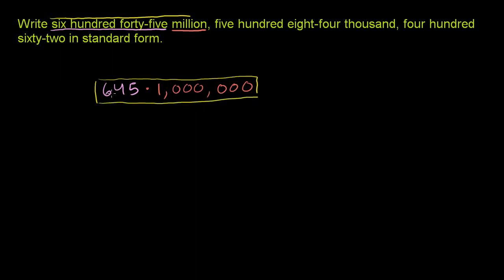What is that when we write it out? If we multiply this out, this equals 645 times the 1 with 6 zeros behind it. I'll write it like this: 645, and then our 6 zeros. 1, 2, 3, 1, 2, 3. That's just this part of the number.